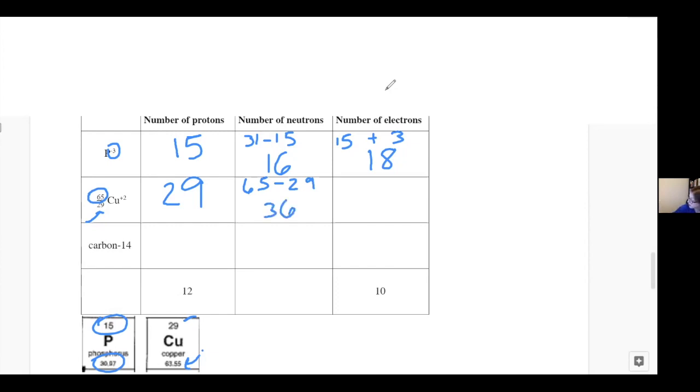Our electrons, if it weren't an ion, would be 29. But in this case, it's a plus 2. It's positively charged. So we must have lost some of those electrons. We never change the number of protons. That's stuck. 29 protons is copper. But if it's going to be positive overall, it must have lost some of our negative electrons. So we would have 27 electrons in this case.